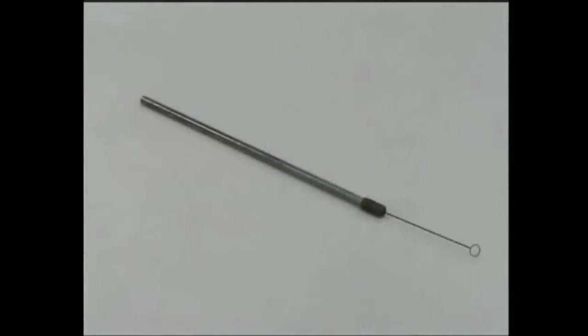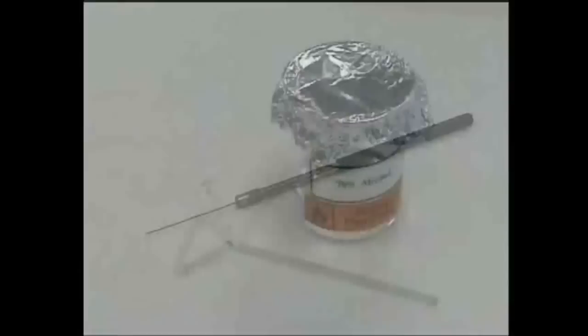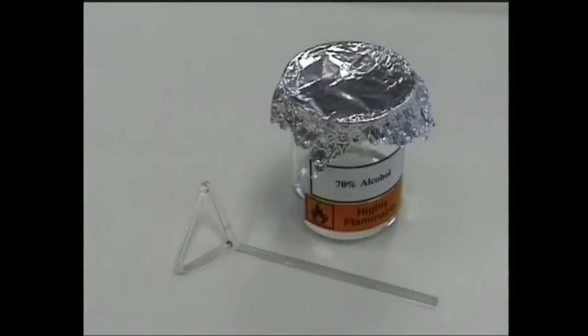You'll also need an inoculating loop and wire, a glass spreader, and a beaker of alcohol. This is used to sterilize the spreader and is kept well away from the Bunsen. You can cover the beaker with foil or a watch glass to minimize the risk of the alcohol catching fire.